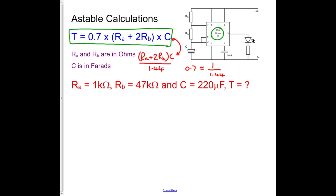We're going to start off with our first example, which is relatively straightforward. RA is 1 kOhm, RB is 47 kOhm, C is 220 microfarads, and we're asked to find out what the time period is. So let's try that. We write down our equation.